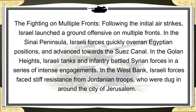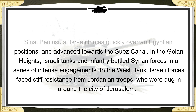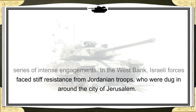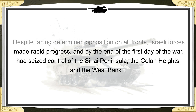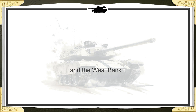Following the initial airstrikes, Israel launched a ground offensive on multiple fronts. In the Sinai Peninsula, Israeli forces quickly overran Egyptian positions and advanced towards the Suez Canal. In the Golan Heights, Israeli tanks and infantry battled Syrian forces in a series of intense engagements. In the West Bank, Israeli forces faced stiff resistance from Jordanian troops who were dug in around the city of Jerusalem. Despite facing determined opposition on all fronts, Israeli forces made rapid progress, and by the end of the first day of the war had seized control of the Sinai Peninsula, the Golan Heights, and the West Bank.